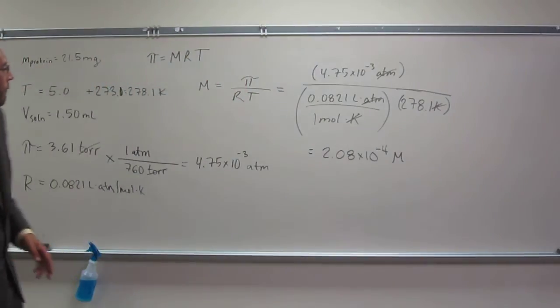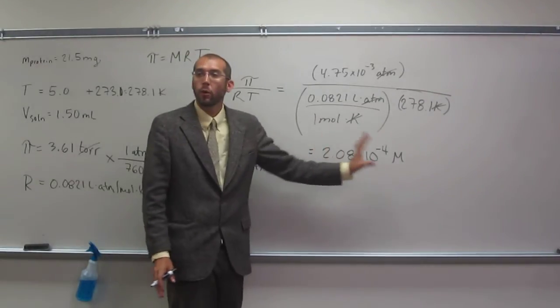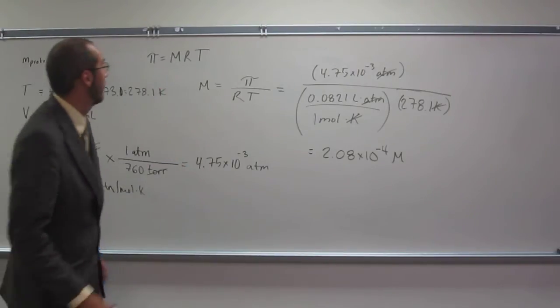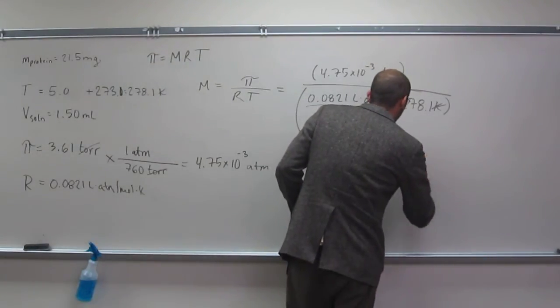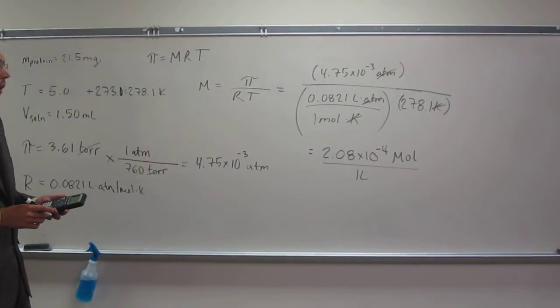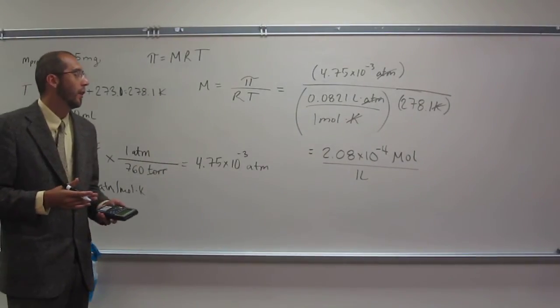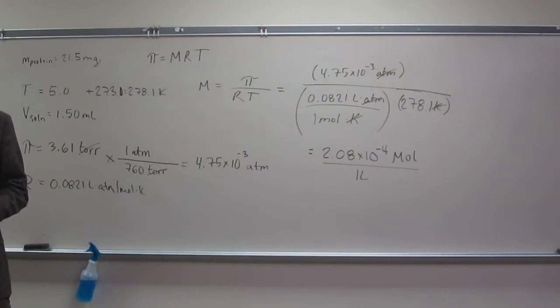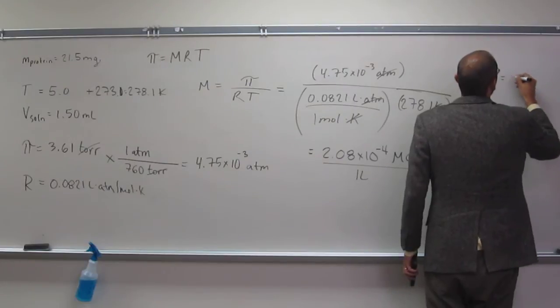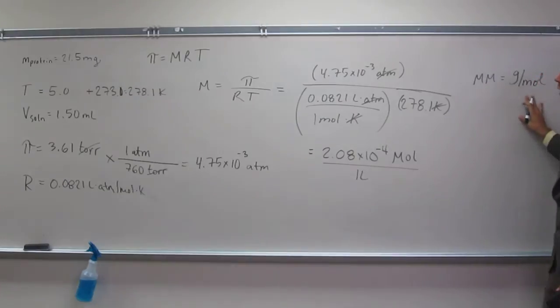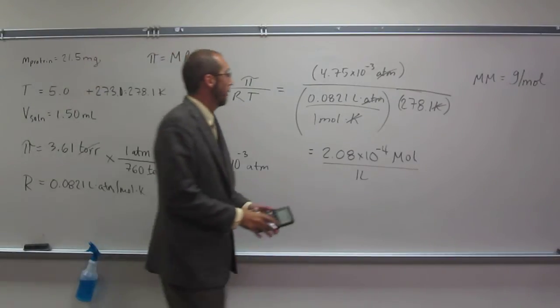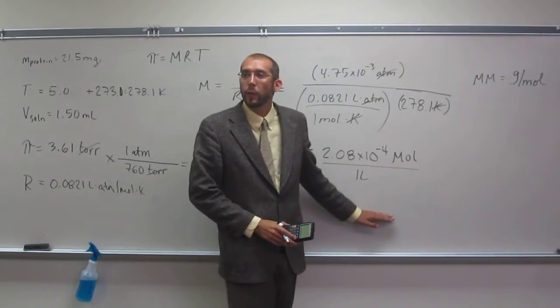So if you guys remember what molar is here, that's moles per liter, right? So remember, we're looking for the molar mass of this thing. So we still got to figure out what is the number of moles. So this is moles per one liter. And we've got moles here. But this is moles per liter. Did we have a liter of solution?